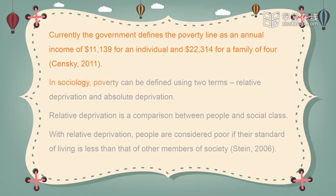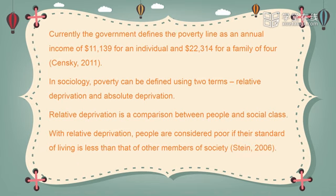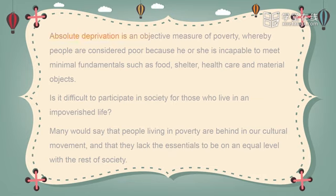In sociology, poverty can be defined using two terms: relative deprivation and absolute deprivation. Relative deprivation is a comparison between people and social class — people are considered poor if their standard of living is less than that of other members of society (Stein, 2006). Absolute deprivation is an objective measure of poverty, whereby people are considered poor because they are incapable of meeting minimal fundamentals such as food, shelter, healthcare, and material objects. Many would say that people living in poverty are behind in our cultural movement and that they lack the essentials to be on an equal level with the rest of society.